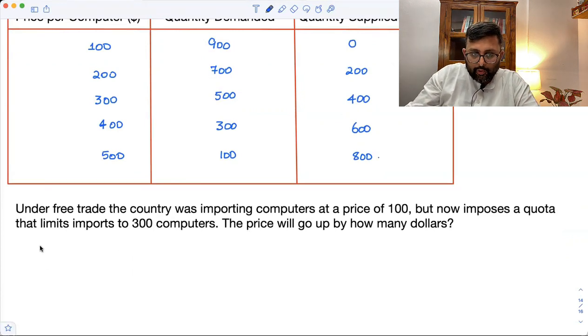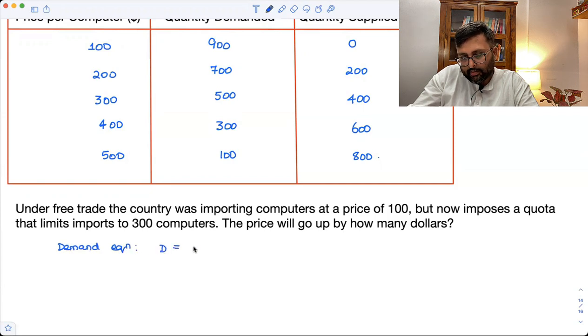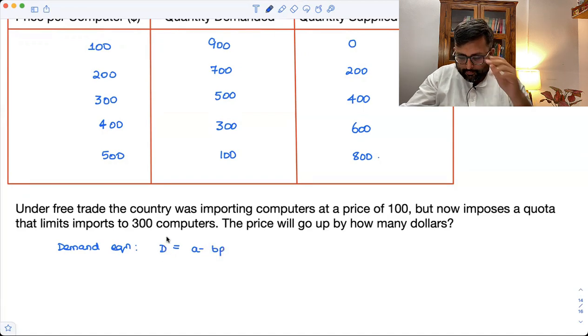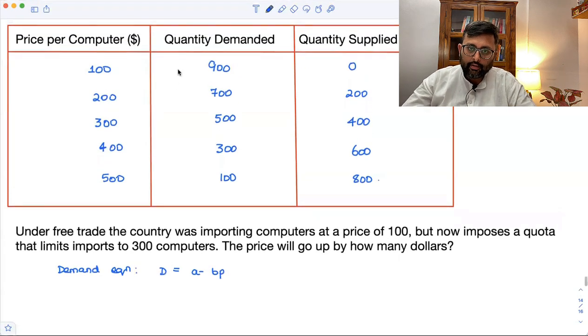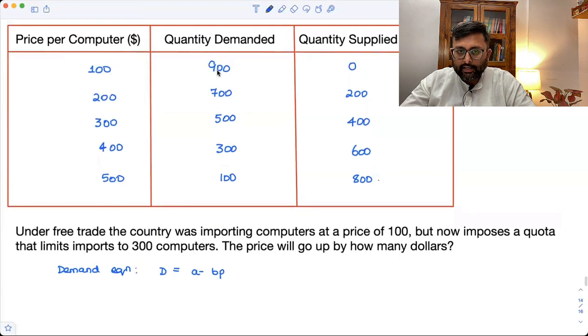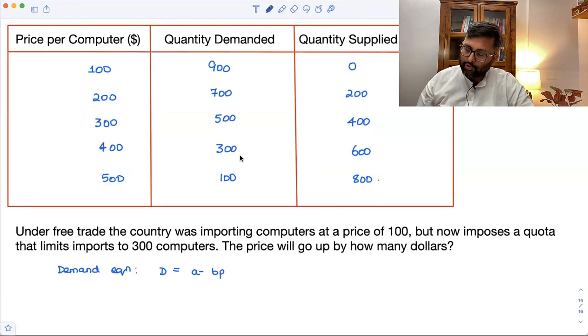Vida, any demand equation, if you write, that will be written as this now. Q is equal to A minus BP. And you are given with these points, right? At price 100, 900 is demanded. At price 500, 100 is demanded. And so many different points, right? So what I can do is that the demand equation has to pass through these points.